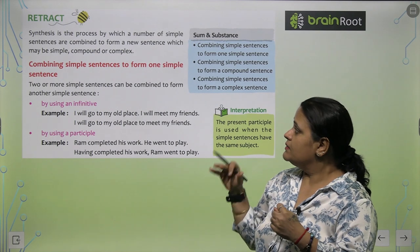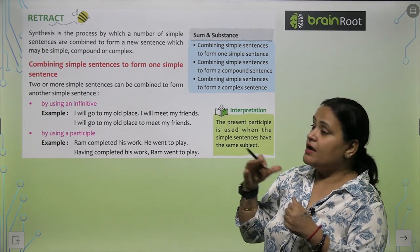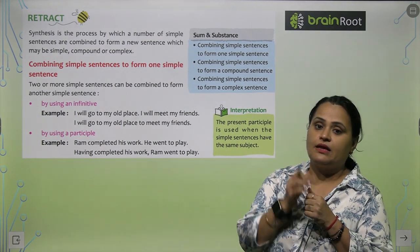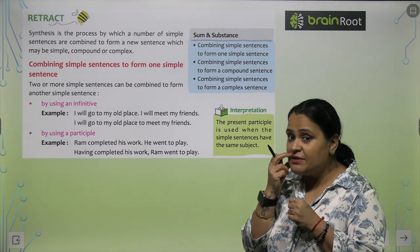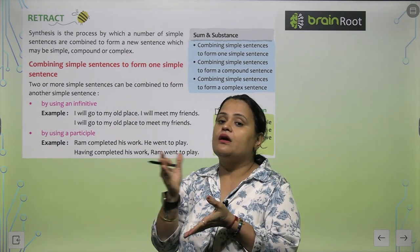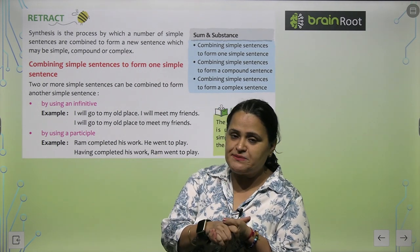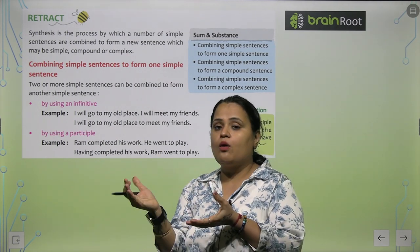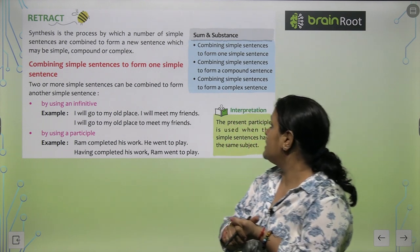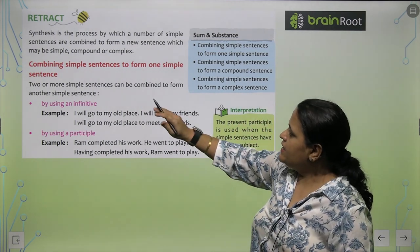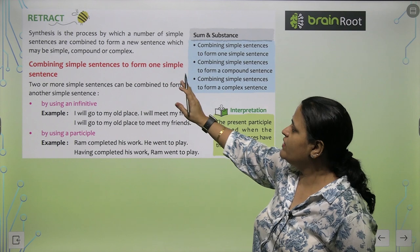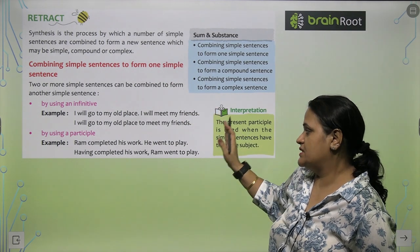Simple sentences ko haam ek aur sentence se combine karte hain. Jis se kya ban sakta hai? Simple sentence bhi ban sakta hai, compound sentence bhi ban sakta hai, aur complex sentence bhi ban sakta hai. So, combining simple sentences to form one simple sentence.